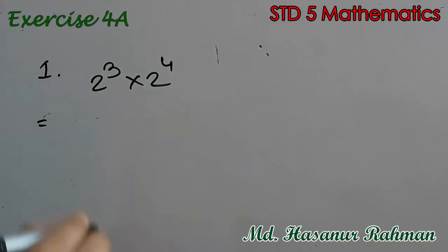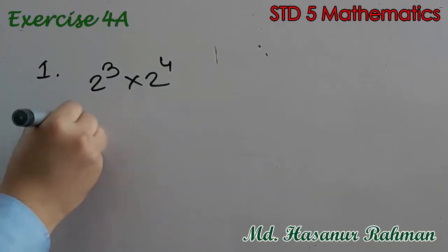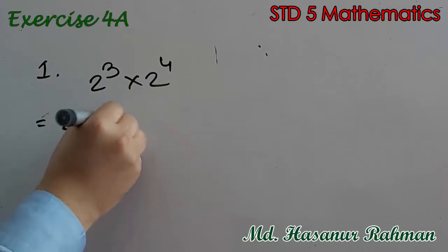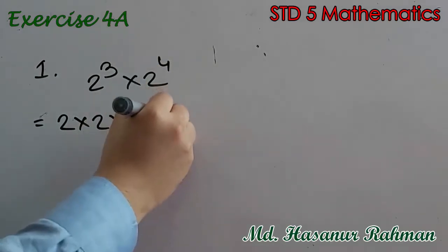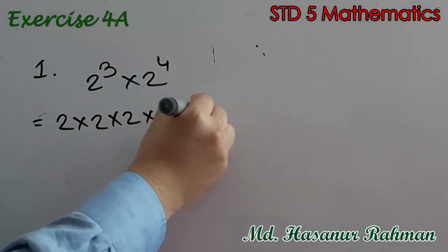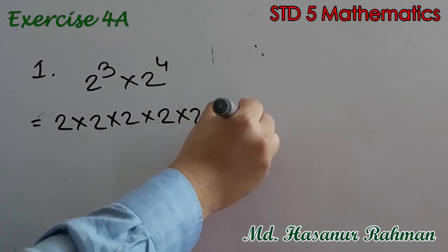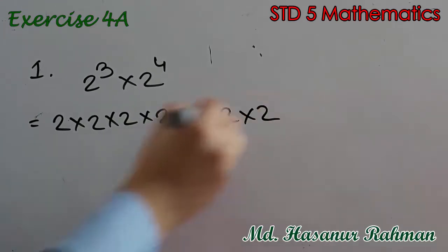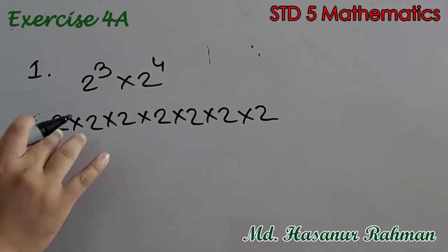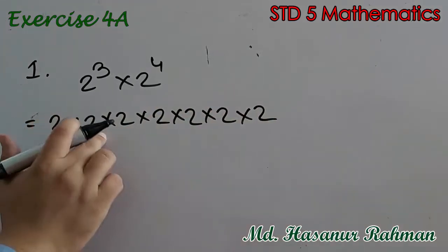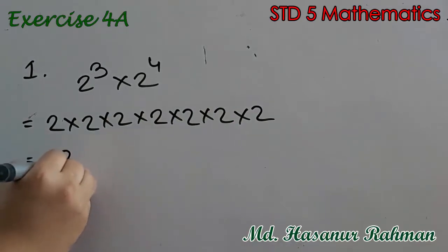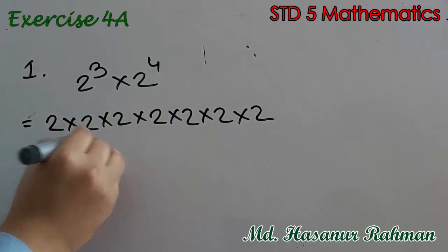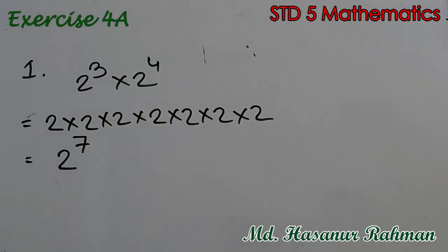First, what does 2 cubed mean? 2 cubed means 2 into 2 into 2. What about 2 to the power 4? That is 2 into 2 into 2 into 2. So there are 7 twos altogether, so we can say that will be 2 to the power 7.